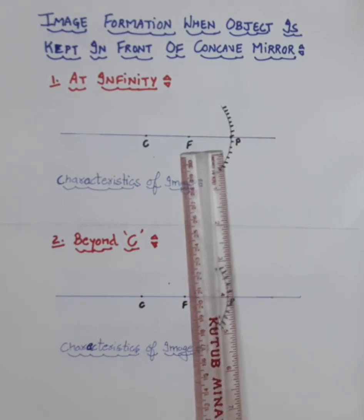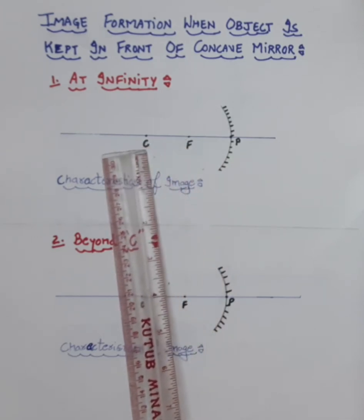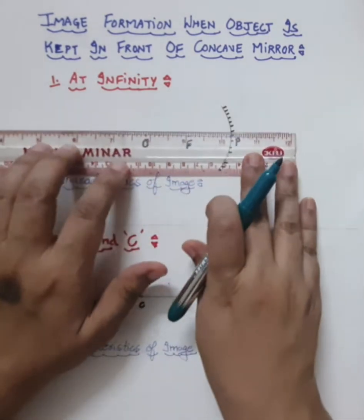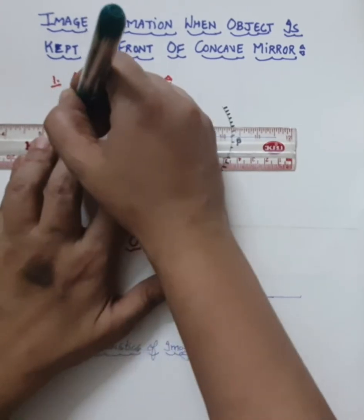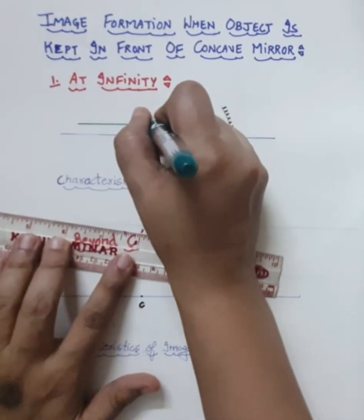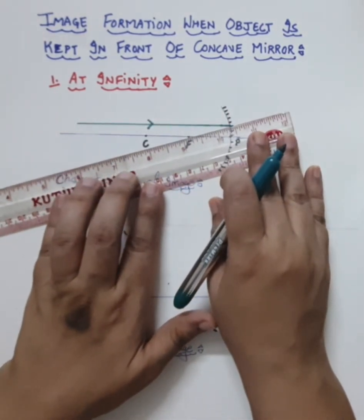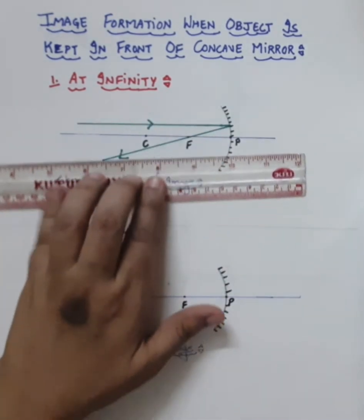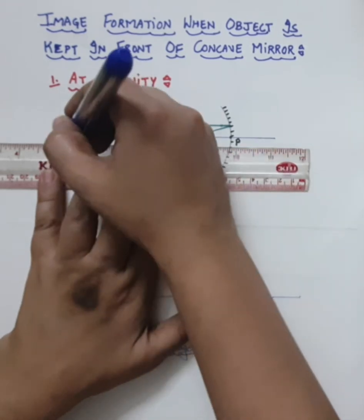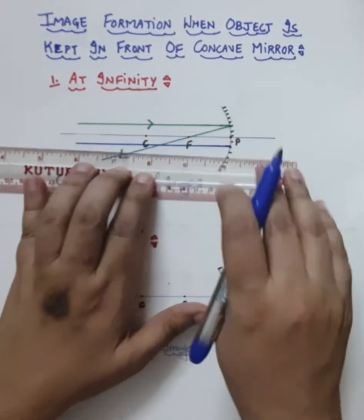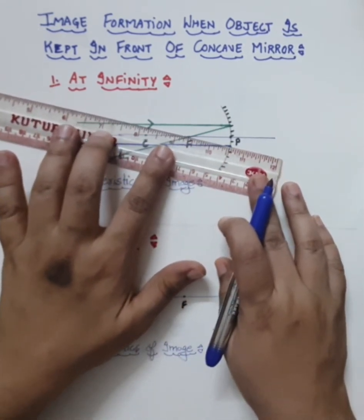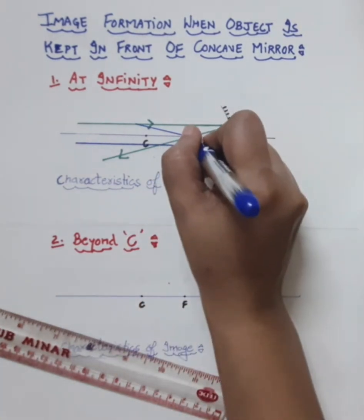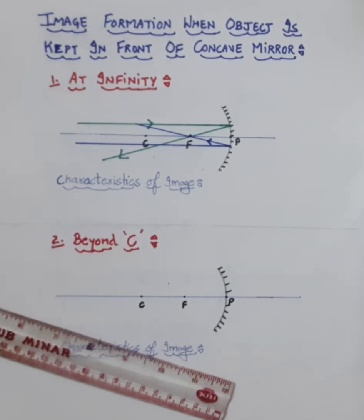We measure 3 centimeters and mark F (focus), then 3 more centimeters and mark C (center of curvature). When the object is at infinity, parallel rays fall on the mirror. The first rule states that a ray parallel to the principal axis passes through focus after reflection. A second parallel ray also passes through focus, so both rays meet at focus.